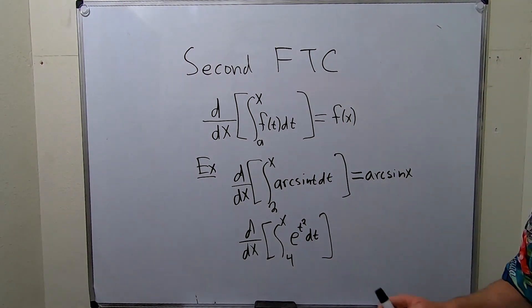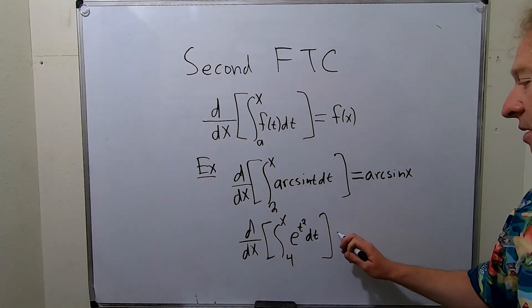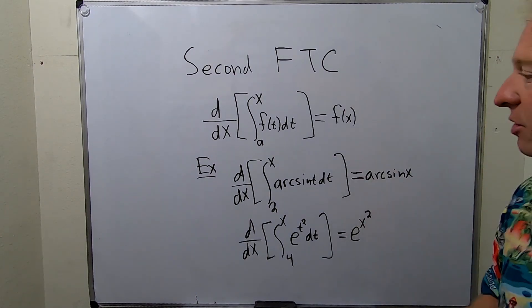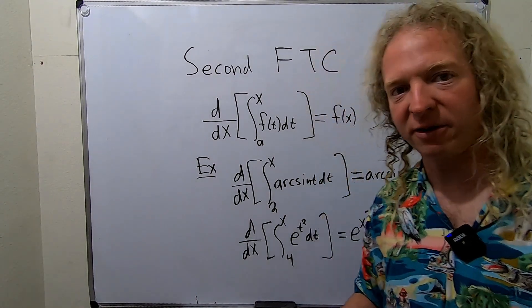So same thing. All you do is you take the x and you put it where the t is. So this will be e to the x squared. So that's how you use the second fundamental theorem of calculus.